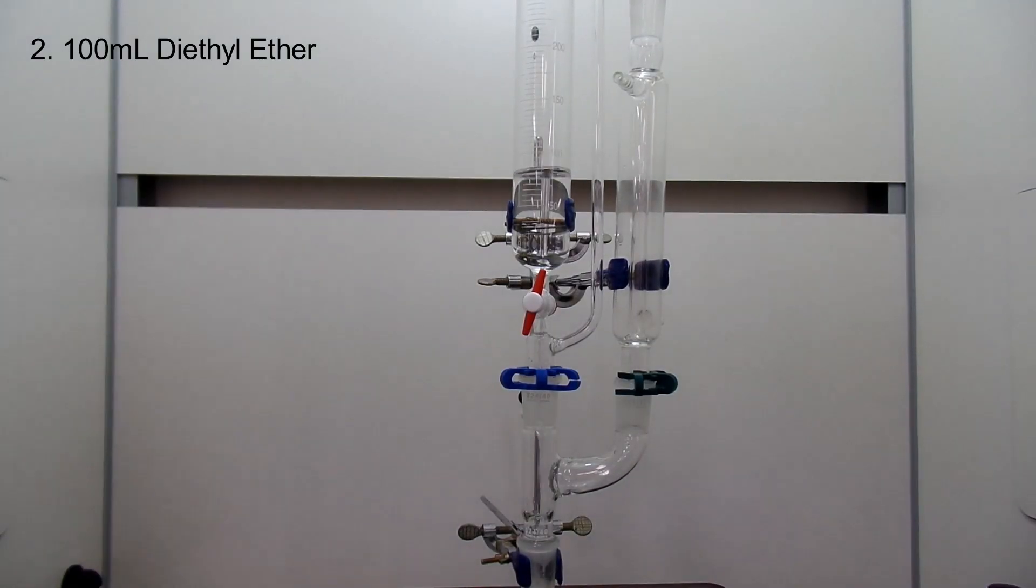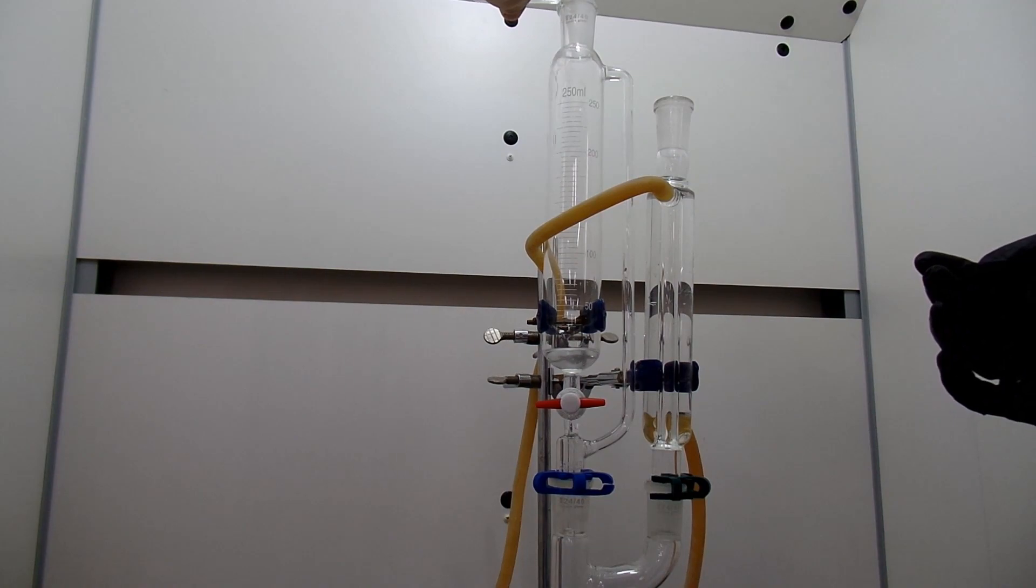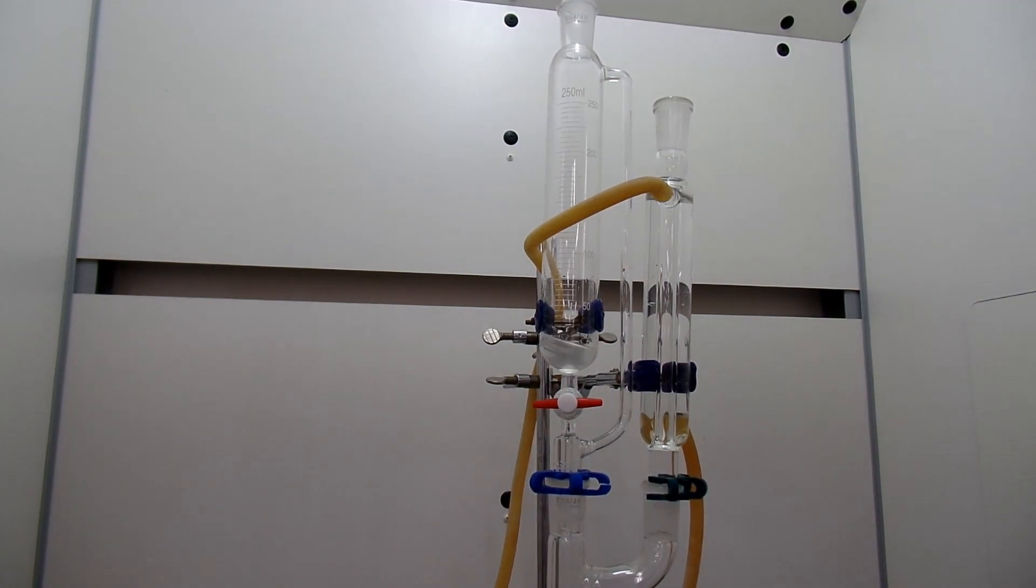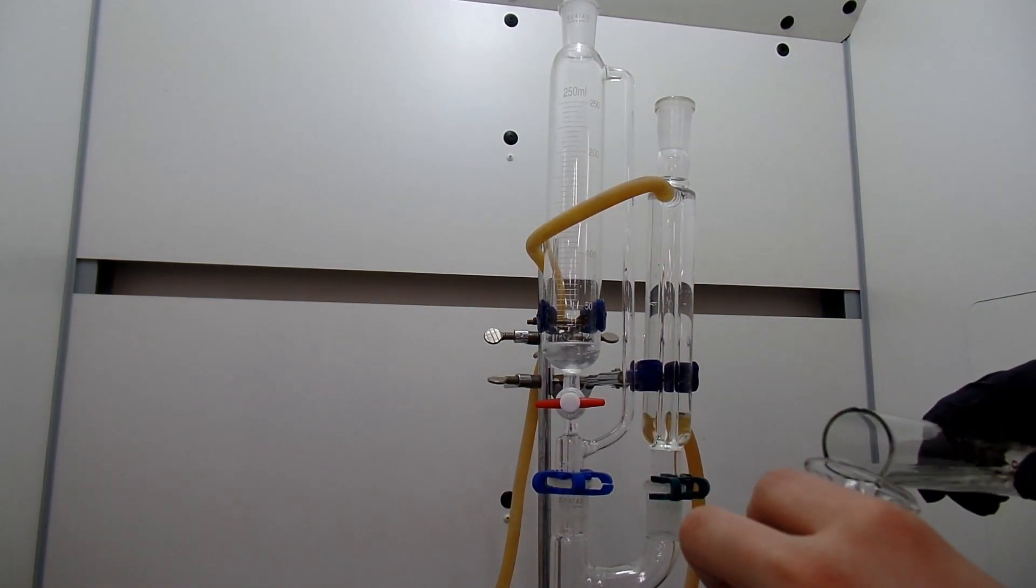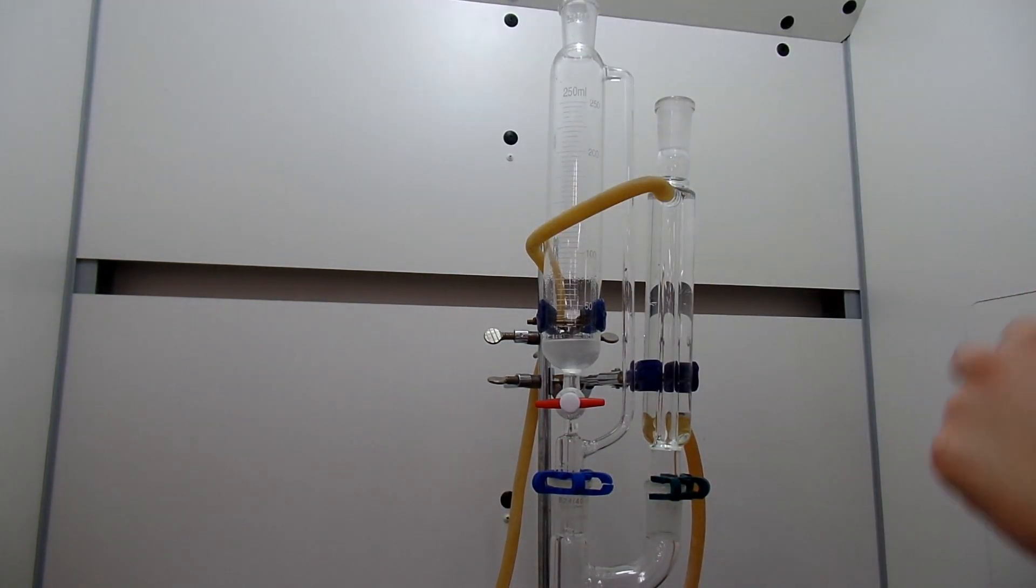So with everything ready, I add 100 ml of diethyl ether into the flask. Second, I add all my 1-bromopropane and 15 ml of diethyl ether into addition funnel. I didn't use the funnel to add 1-bromopropane and some of it got through the pressure equalizing port.